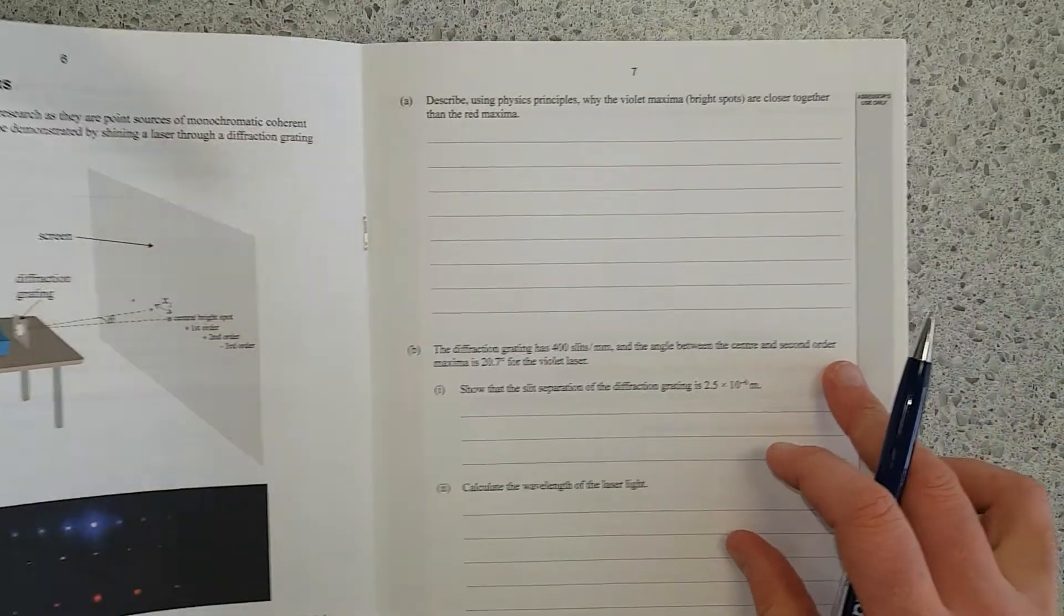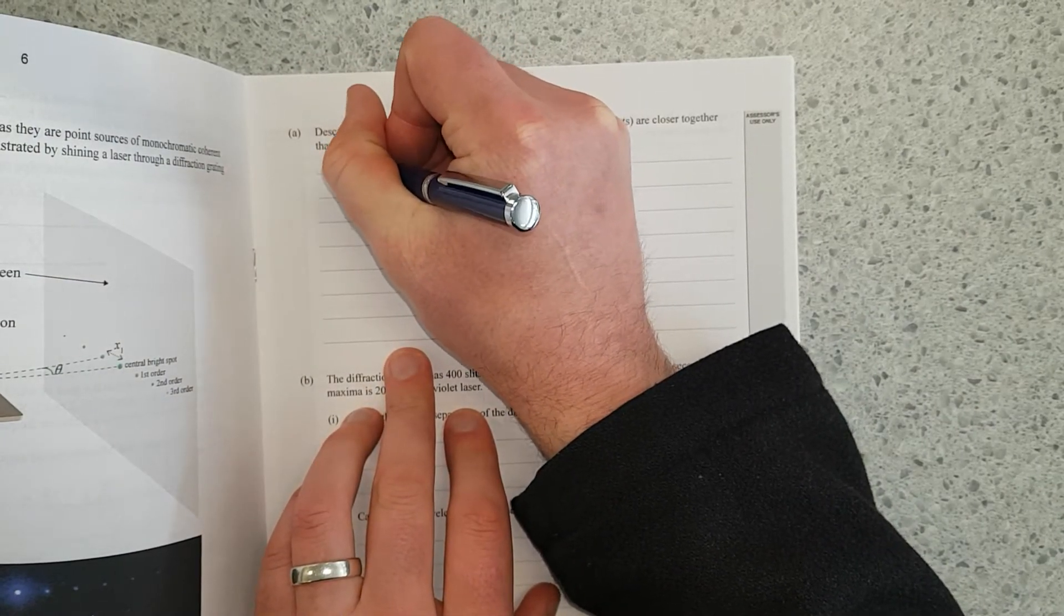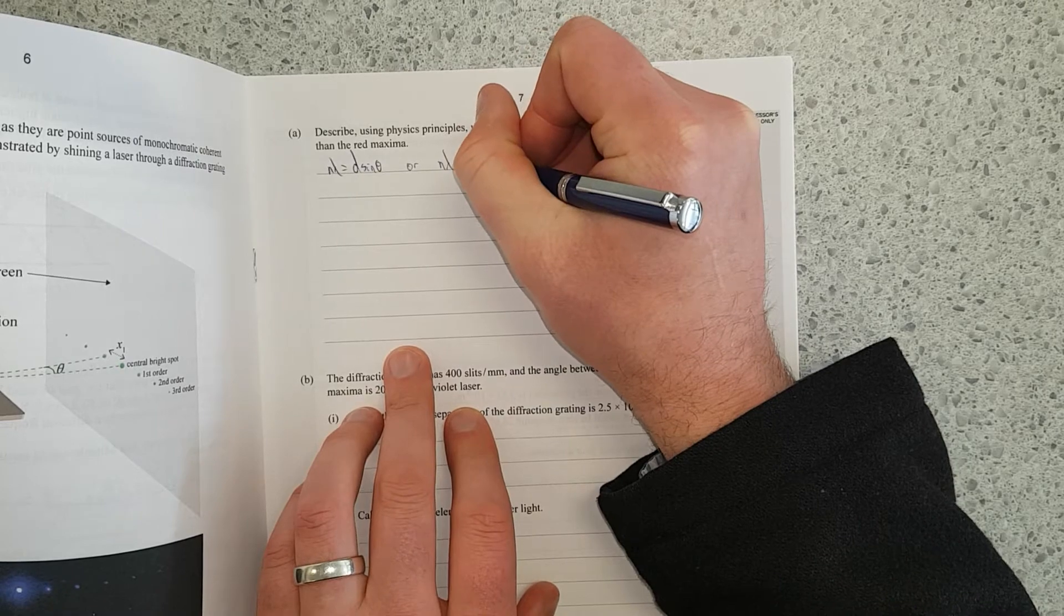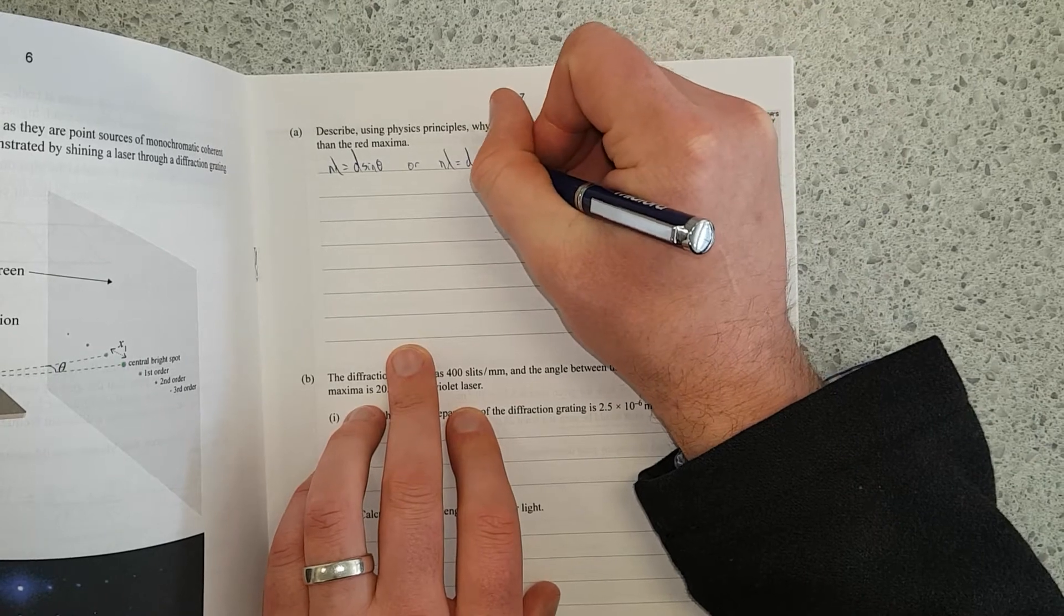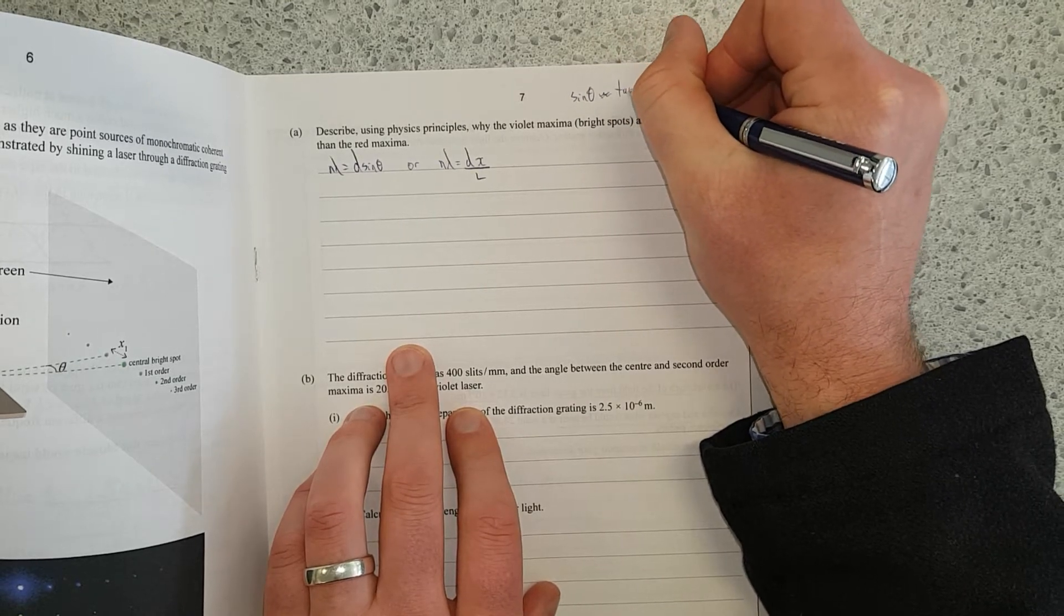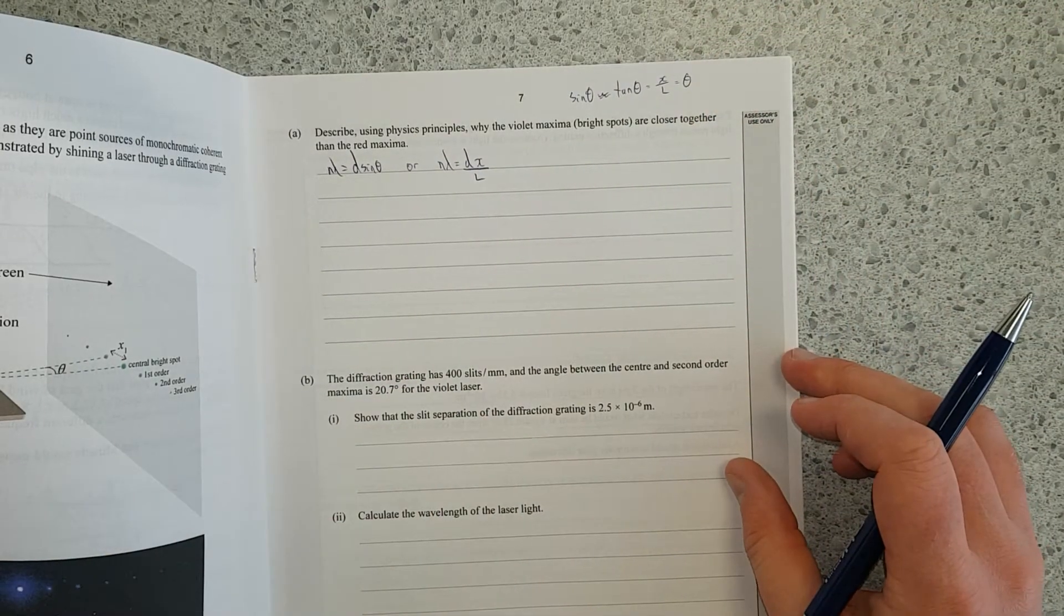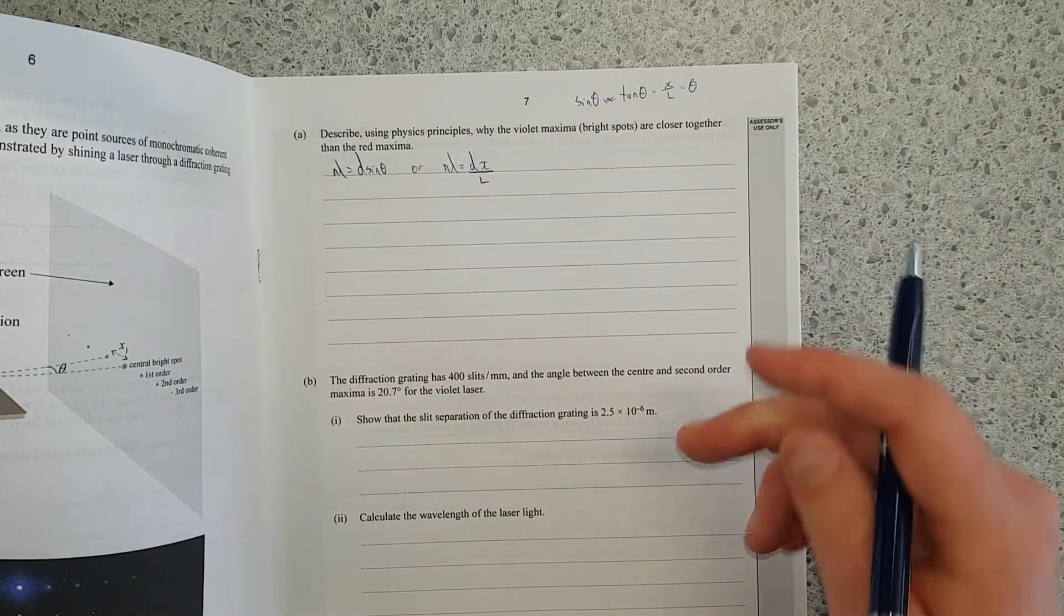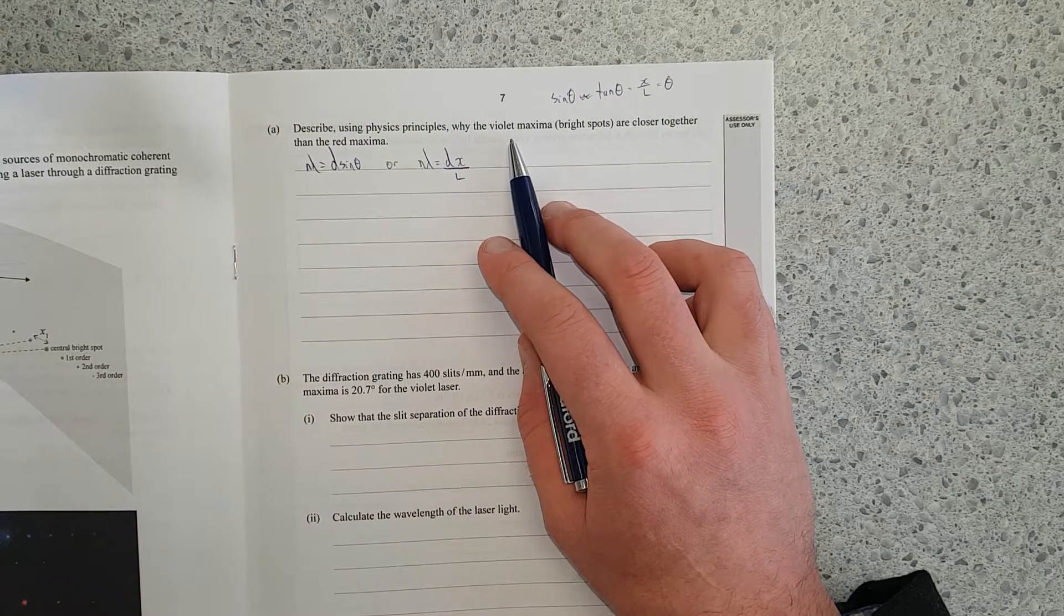are closer together than red maxima. So the first thing you're going to do is you can either write n lambda equals d sin theta or n lambda equals dx over l. I'm not going to go over it, but in your formula sheet you've got x over l and that is because sin theta for small angles is approximately equal to tan theta which is equal to x over l.